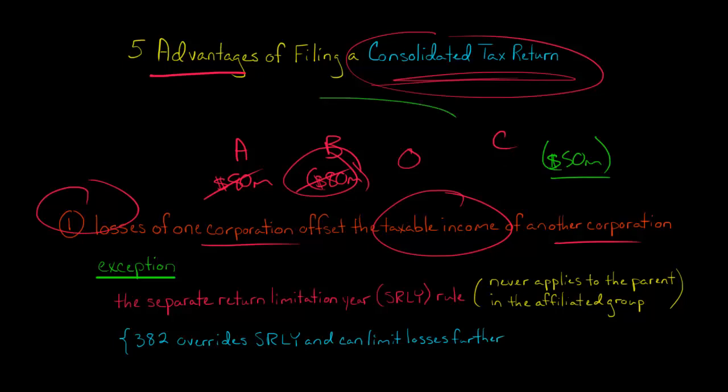Corporation C or this entire affiliated group will only be able to deduct these losses and apply these losses to the extent that C generates taxable income. I'm going to make an entire video on this. This is called the separate return limitation year rule or SRLY rule.